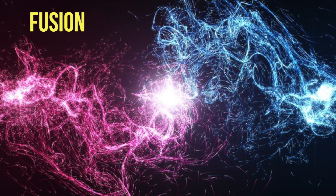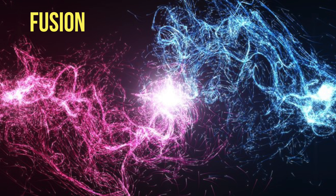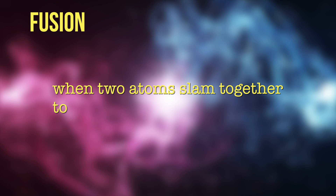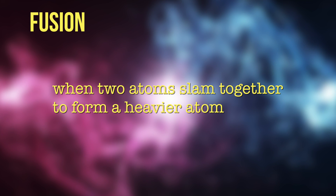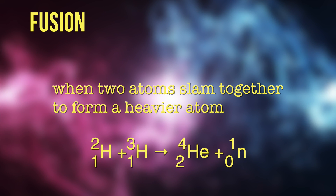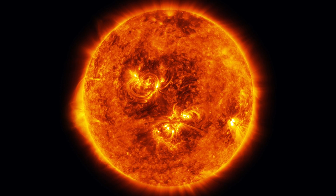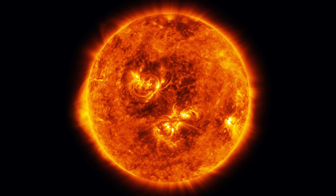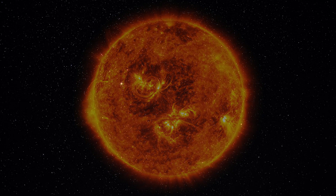Fusion is the opposite of nuclear fission. It takes place when two atoms slam together to form a heavier atom. Typically, two isotopes of hydrogen fuse to form one helium atom under conditions of extreme pressure and temperature. Fusion is what powers the sun and the other stars.